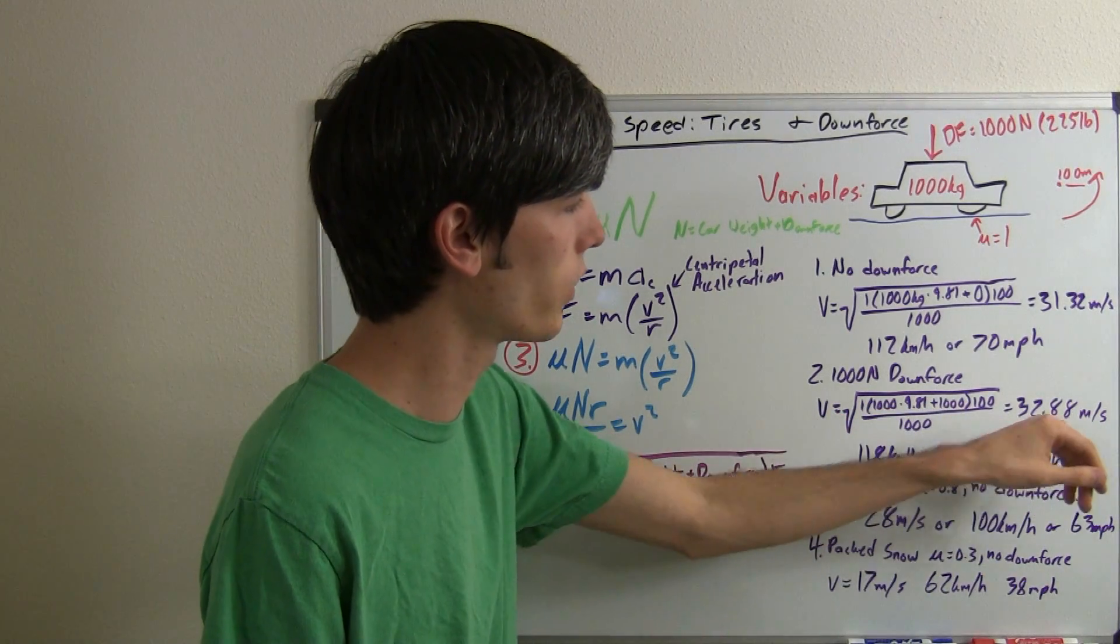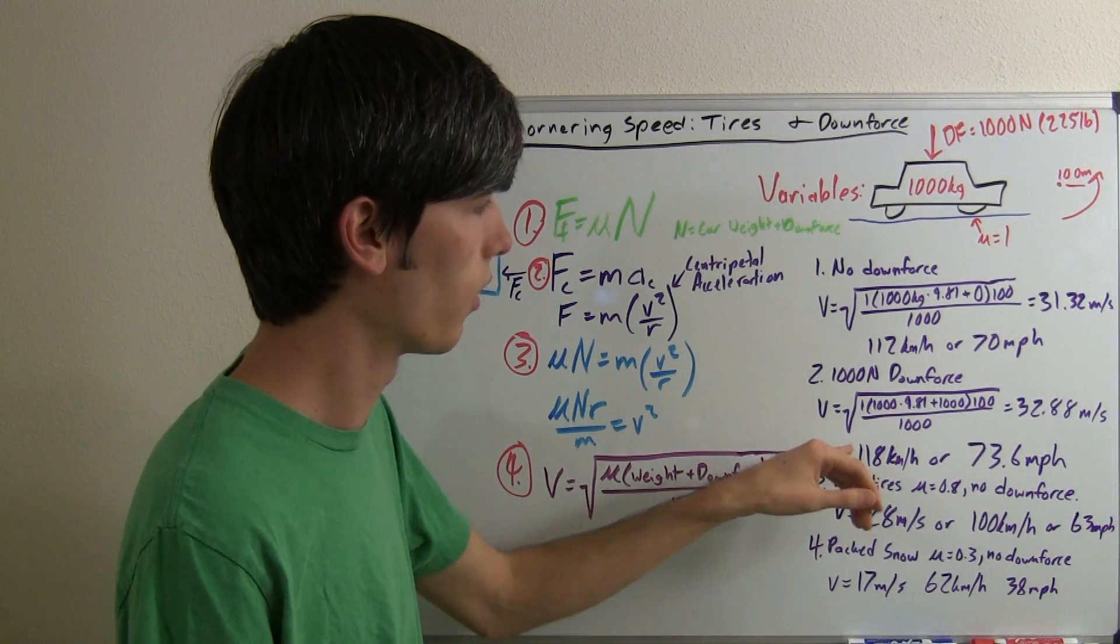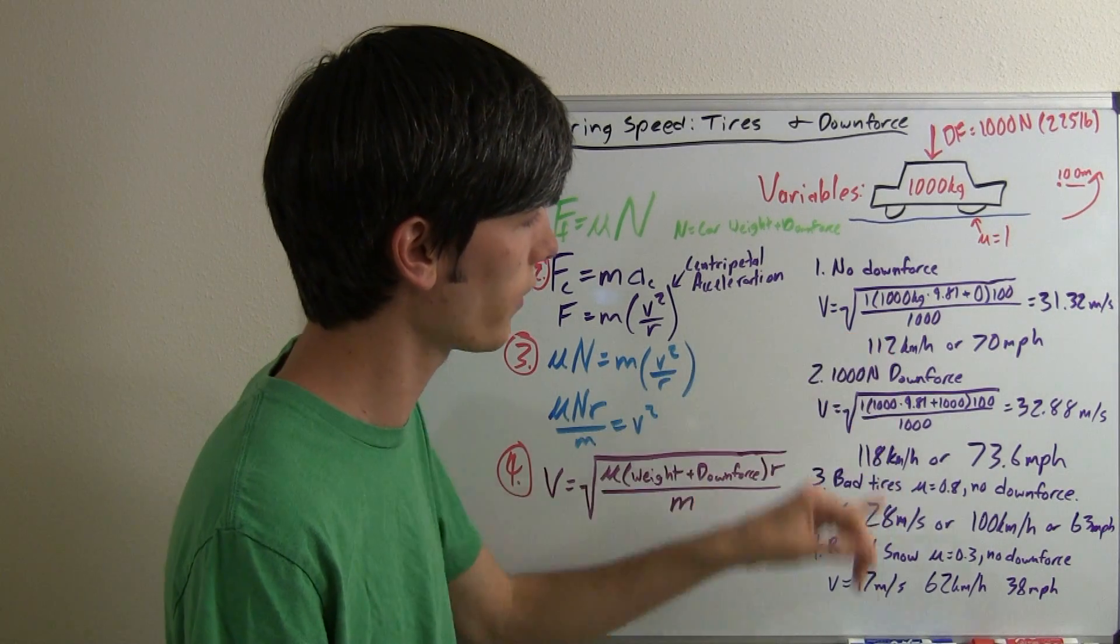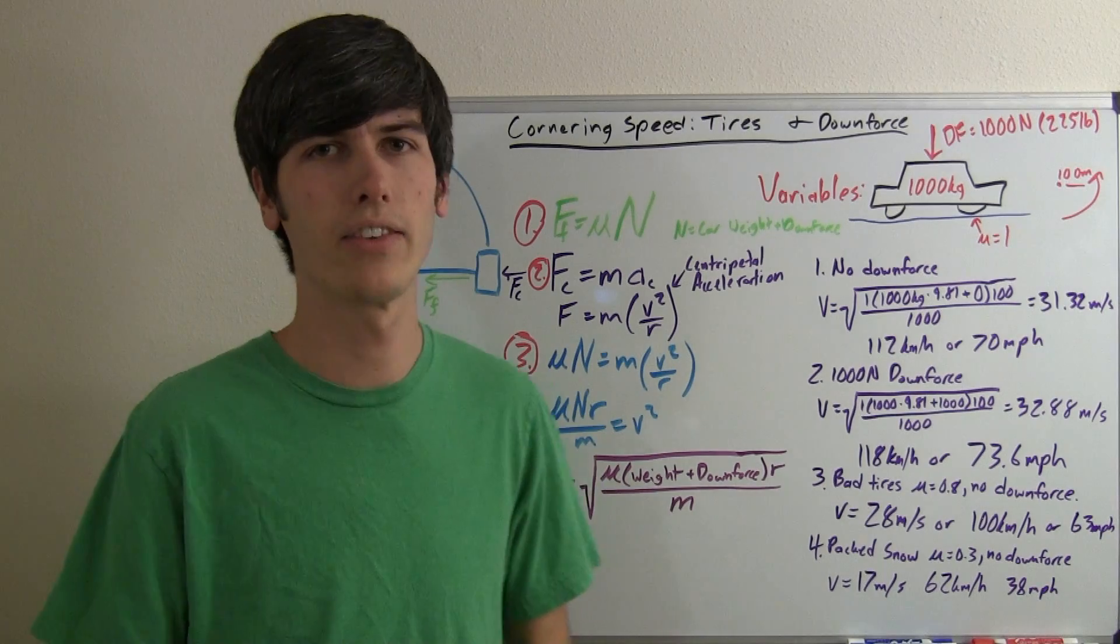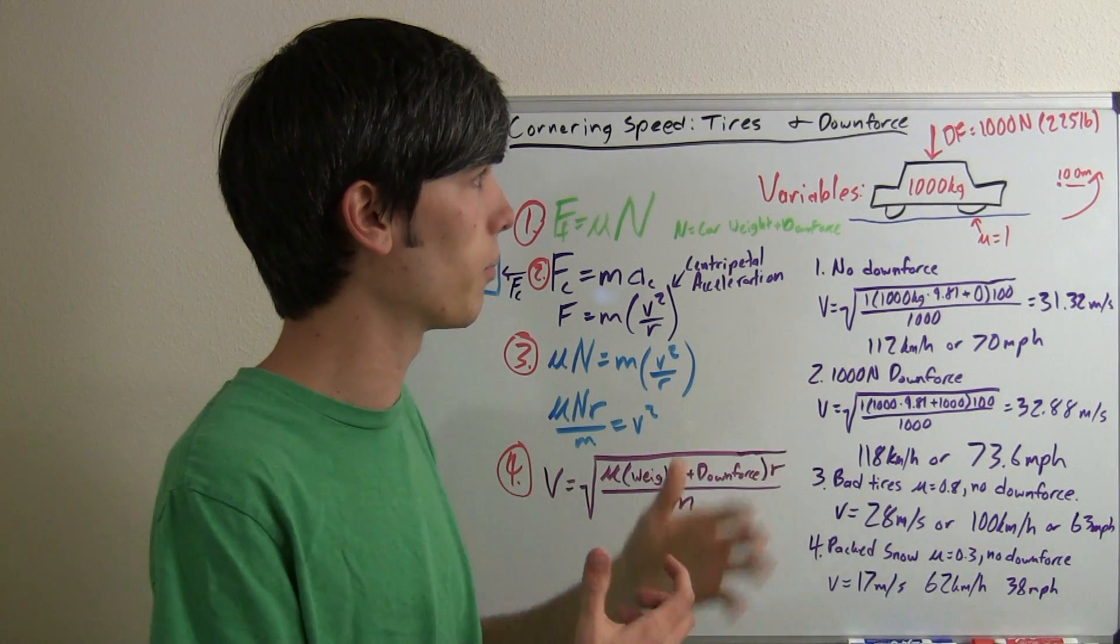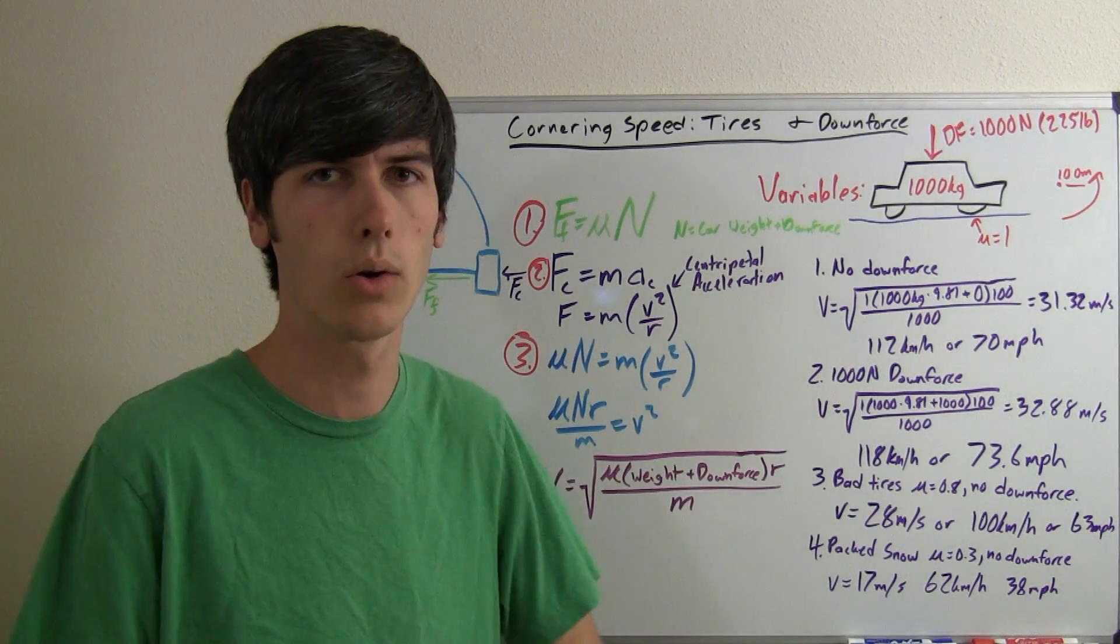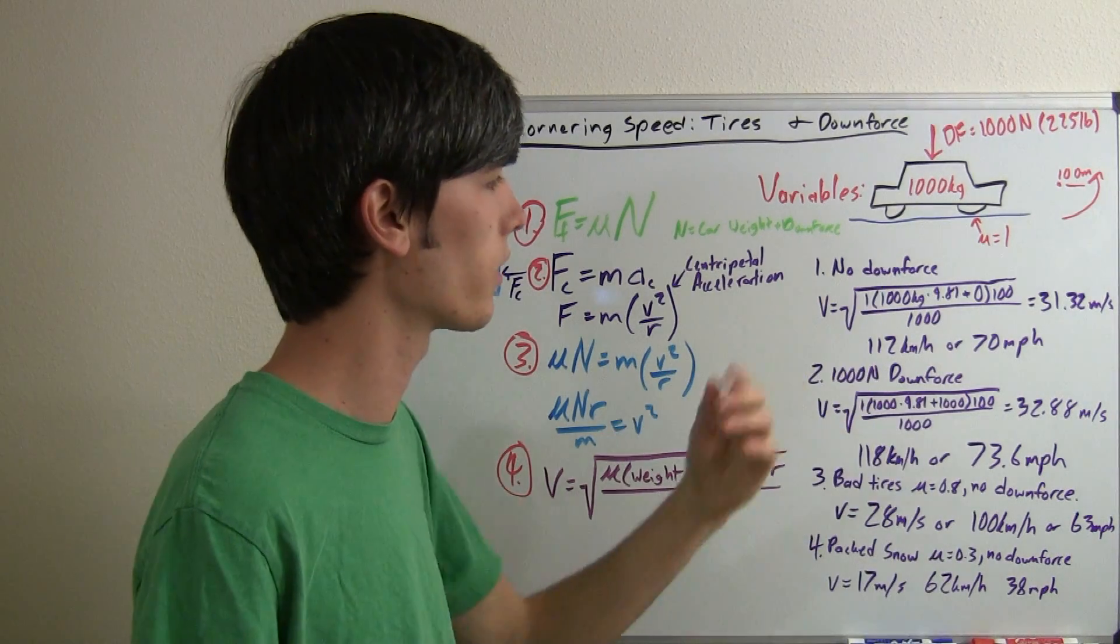So, we plug it all in, it gives us 32.88 meters per second, or about 6 kilometers an hour faster, or about 3.6 miles per hour faster than if we didn't have any downforce at all. So you can see how it actually improves the speed for which a car can go around a corner a good amount, depending on the downforce.